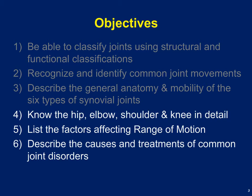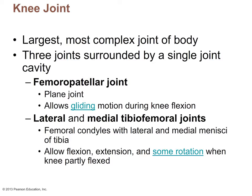So after you finish today's lecture, you should be able to describe the anatomy of the hip, elbow, shoulder, and knee in detail. You should also be able to describe the factors that affect range of motion. And finally, you should be able to describe different types of joint disorders and injuries, as well as the treatments for these disorders.